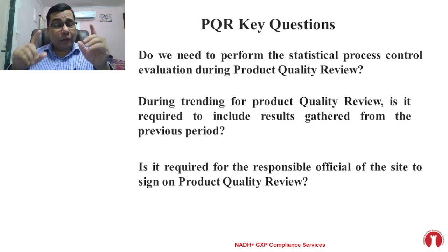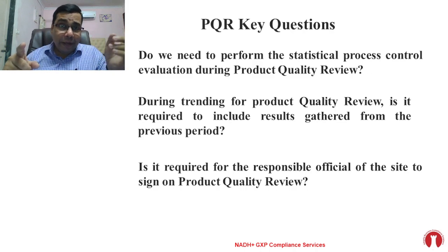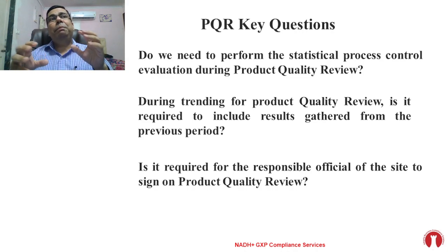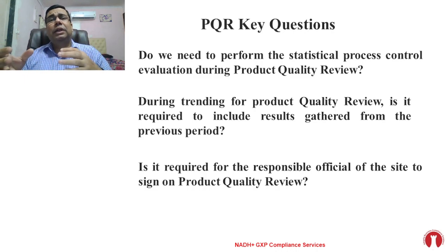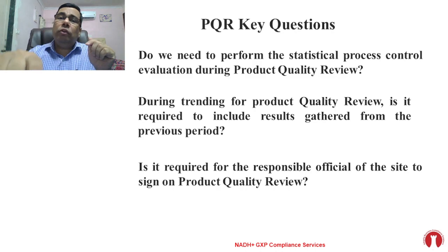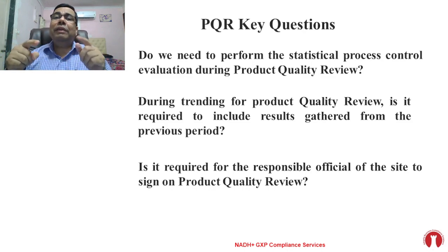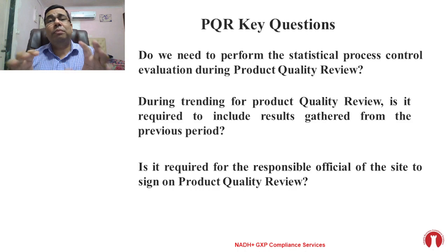The second question is: during trending for Product Quality Review, is it required to include results gathered from the previous PQR or previous period? Many people answer that if we are manufacturing limited batches — one or two, less than three — then we need to consider the previous PQR. But what is the actual expectation of the guideline? We will discuss this, irrespective of number of batches.